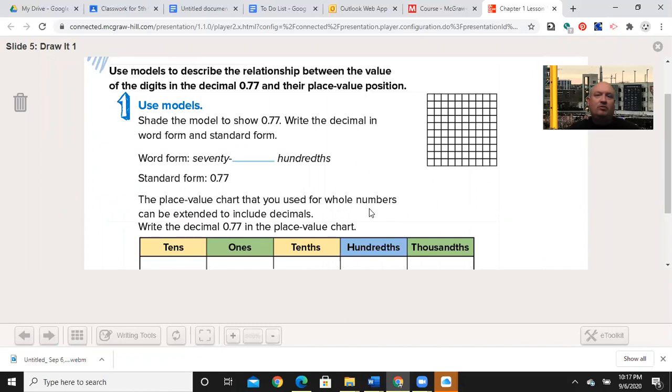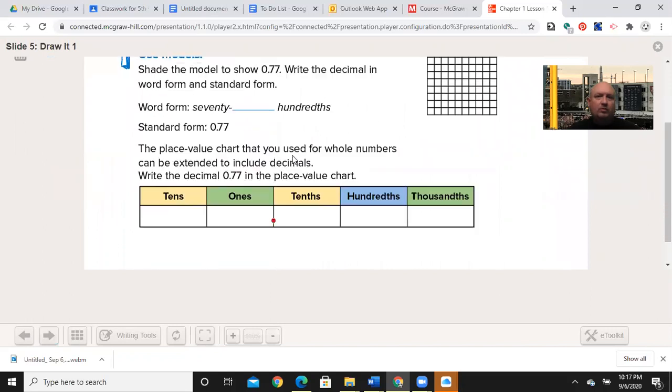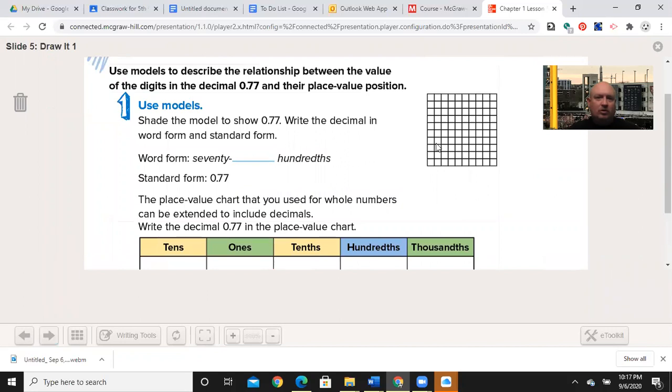Use models to describe the relationship between the value of the digits in the decimal 0.77 and their place value position. I can shade the model to show seventy-seven hundredths. Now we're looking at the first digit. The first seven tells me I need to color in seven rows, so you should color in seven whole rows.